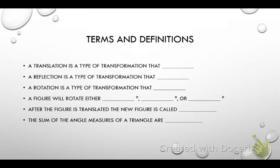So terms and definitions. Let's go ahead and we're just going to verbalize. We're going to answer these questions together. Translation is a type of transformation that what? Slides. A reflection does what? Flips. A rotation turns. A figure will either rotate 90, 180, or 270.